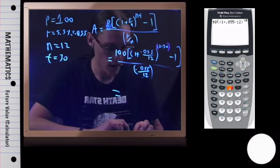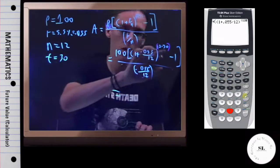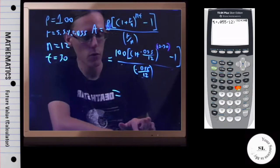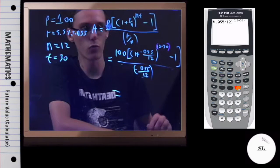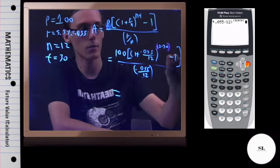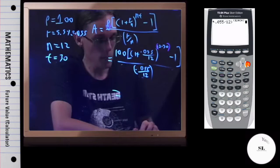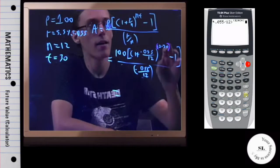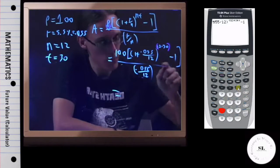So parentheses, 12 times 30, close these parentheses, and if you're using one of the newer calculators, you'll have to press right so that the cursor up here hops down here. Minus 1. Now finally, I close these parentheses on top.